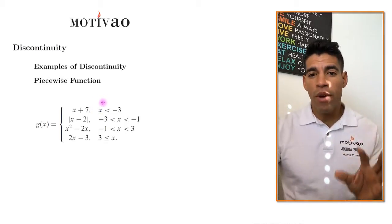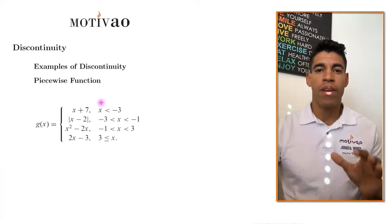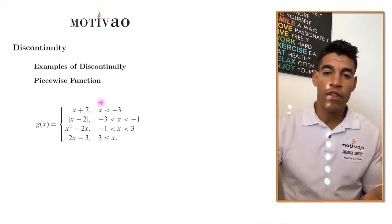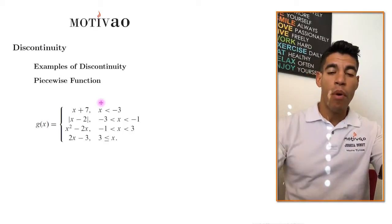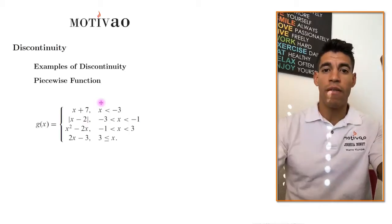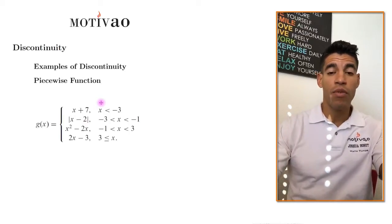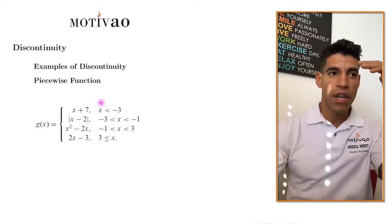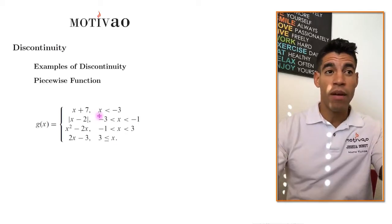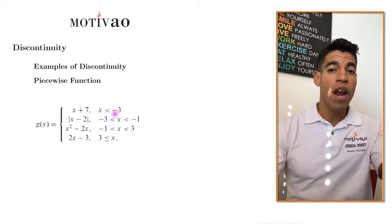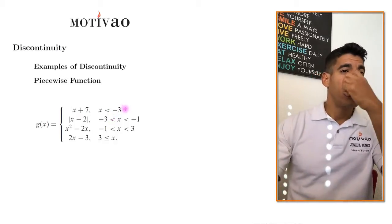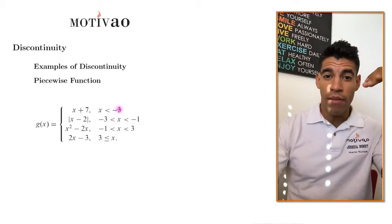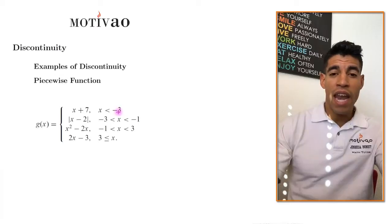Whenever you have a piecewise function and you want to determine if it's discontinuous or not, you want to be specific on the points of separation between each function — these intervals here. You want to know if those points are continuous or not. So let's start from top to bottom at negative 3.